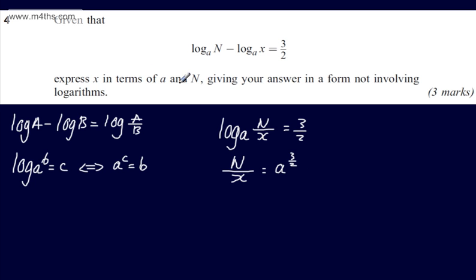We need to express x in terms of a and N. Multiplying both sides by x, dividing both sides by a to the power of 3 over 2, we can say that x would be equal now to N over a to the power of 3 over 2. You could write this now as x is equal to N multiplied by a to the power of minus 3 over 2.